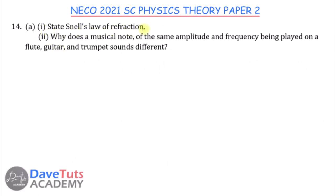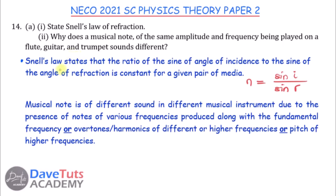Snell's law states that the ratio of the sine of the angle of incidence to the sine of the angle of refraction is constant for a given pair of media — this ratio is the refractive index. A musical note of the same amplitude and frequency sounds different on a flute, guitar, and trumpet because of the presence of overtones or harmonics of different higher frequencies produced along with the fundamental frequency.